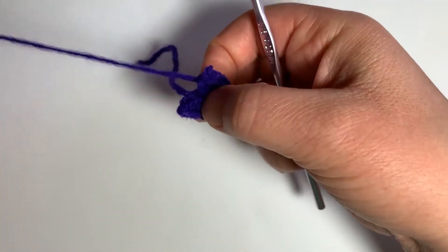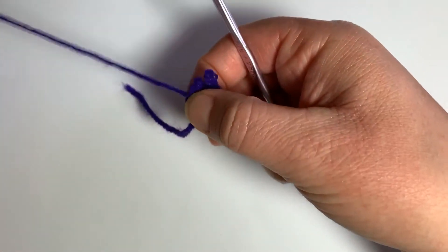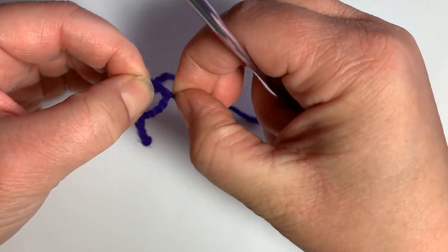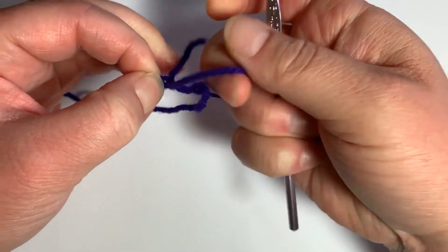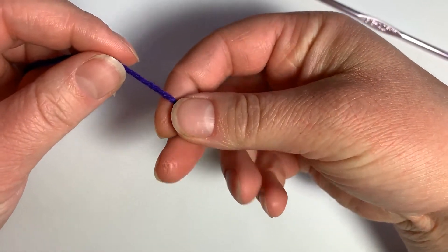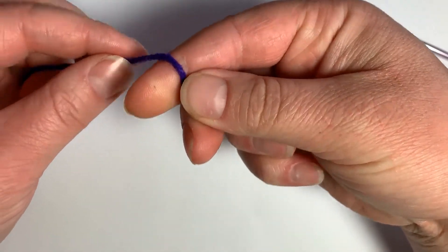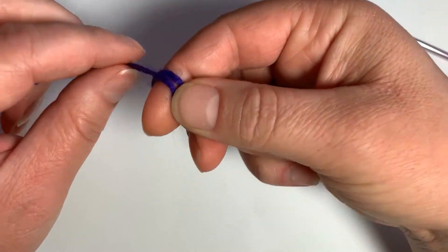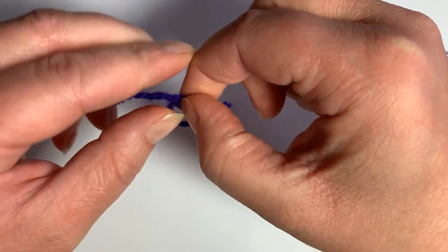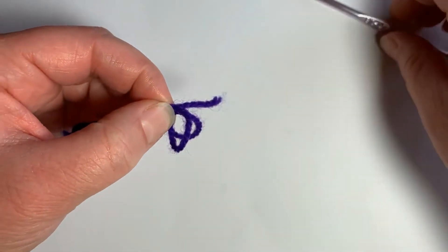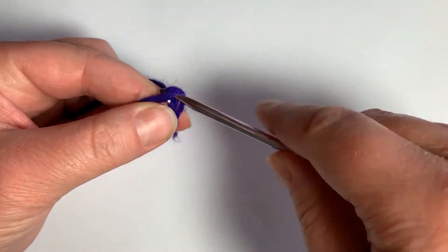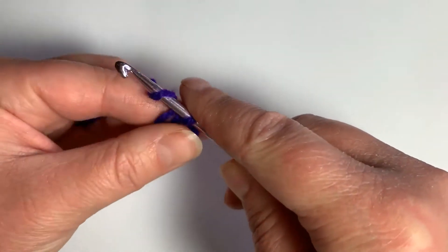If you want to do half double crochets in a magic circle using the invisible starting half double crochet, we would begin with the same method. Grab the yarn between your thumb and your forefinger. Loop around once, twice, pinch where they join. Insert your hook into the circle. Pull up a loop. Chain one.